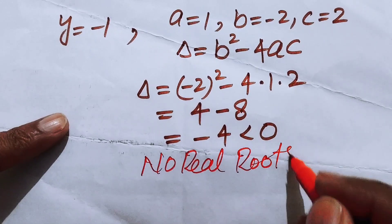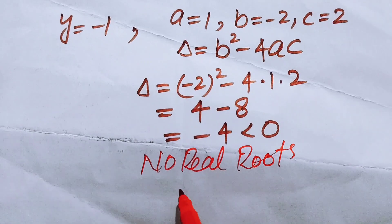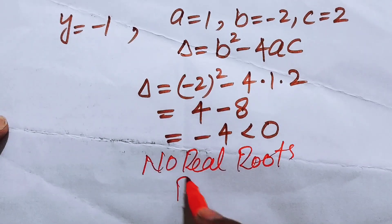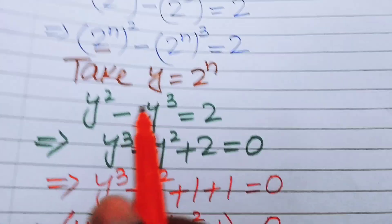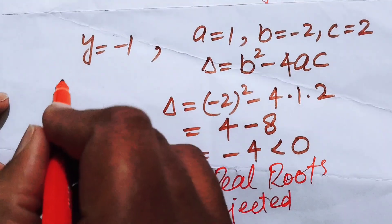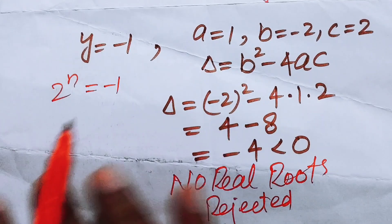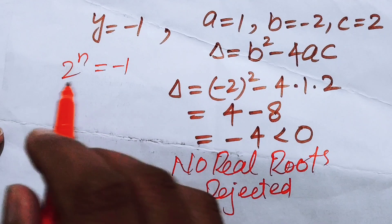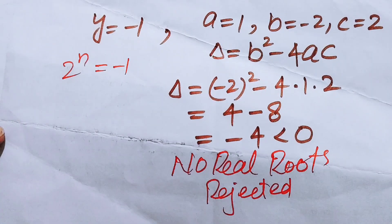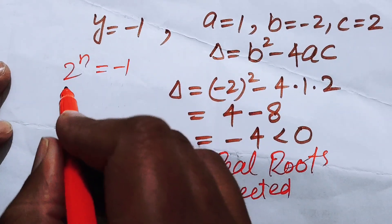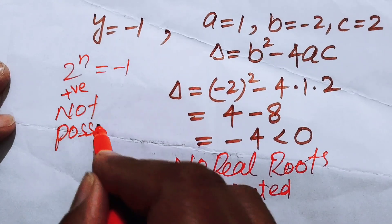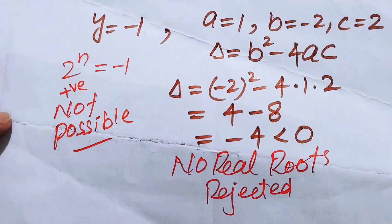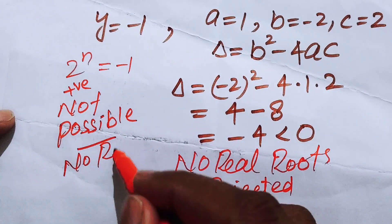We reject the second case since the quadratic gives no real solution. Returning to the first case, we back-substitute y equals minus 1 into y equals 2 to the power of n, giving 2 to the power of n equals minus 1. However, an exponential function can never equal a negative value — it always gives positive values — so this case also yields no real solution.